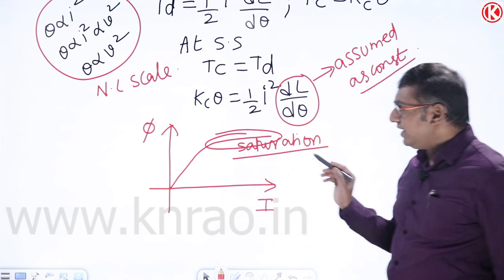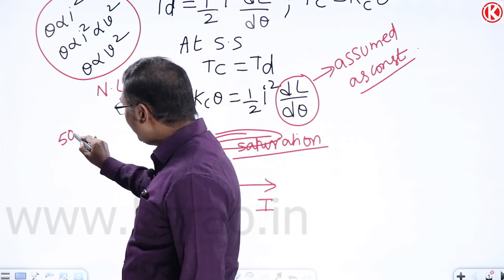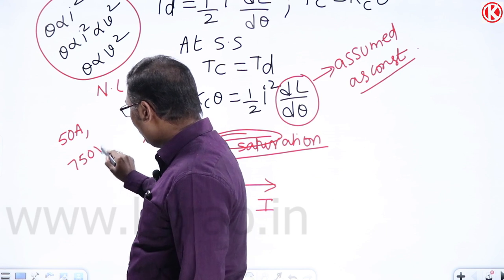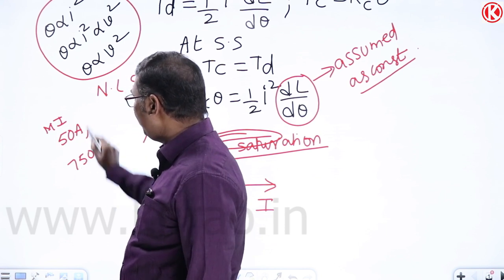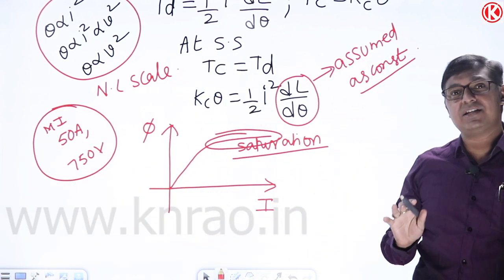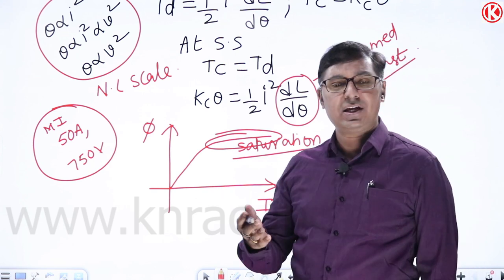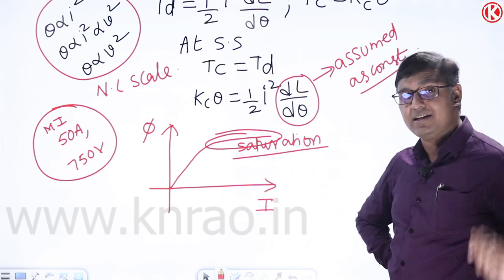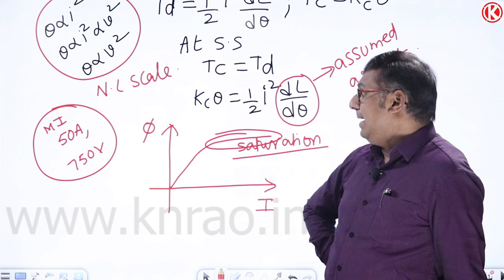Moving iron ammeters and voltmeters can be designed to measure up to 50 amps and 750 volts respectively. If higher measurements are required, we use instrument transformers — Current Transformers (CT) and Potential Transformers (PT).